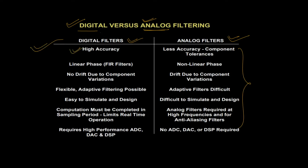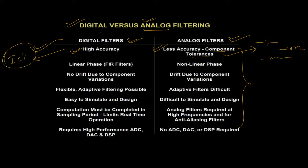The very first advantage is high accuracy of digital filters, whereas analog filters offer less accuracy, and that is due to component tolerances. For analog filters we generally use capacitors, inductors, and resistor type elements. But for digital filters, they come in IC packages, and this gives an edge to digital filters over analog filters.